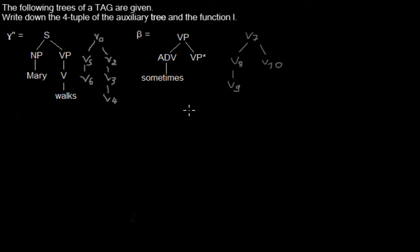And the first question is, what is the auxiliary tree? It's the one on the right side. You can tell by the asterisk at the one footnote. What's also important is that the footnote has the same label as the root node.